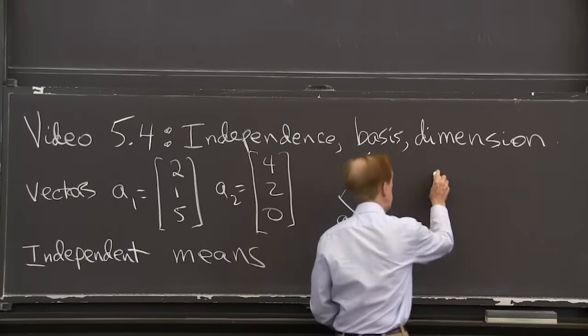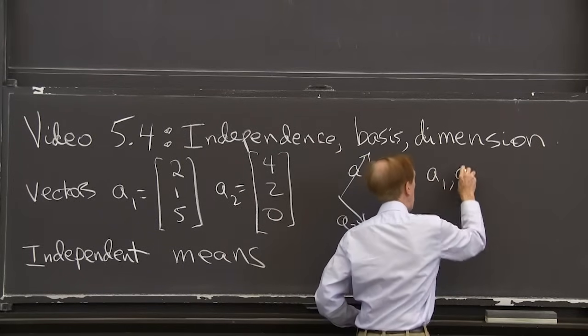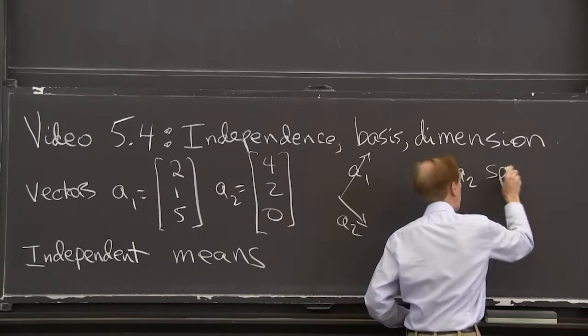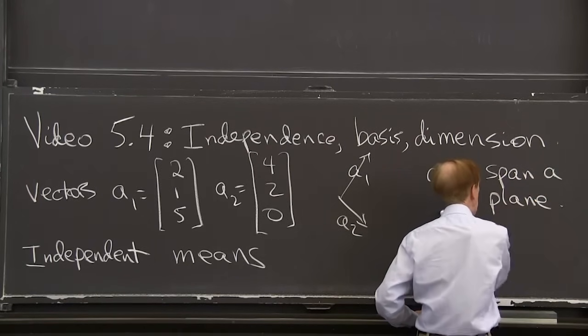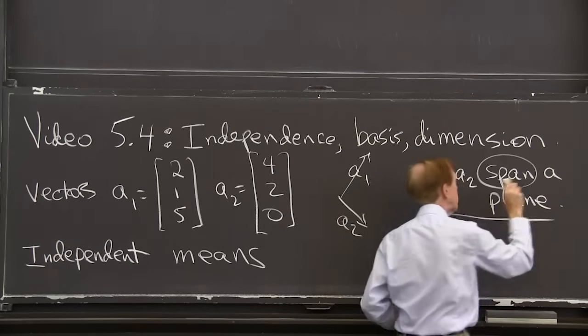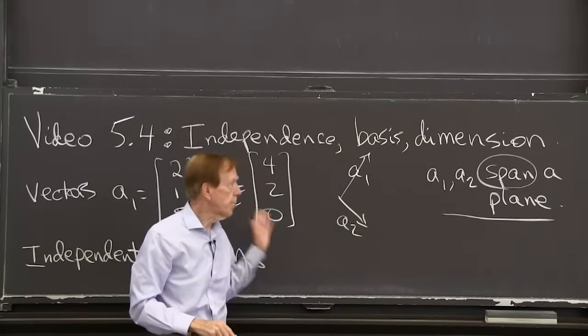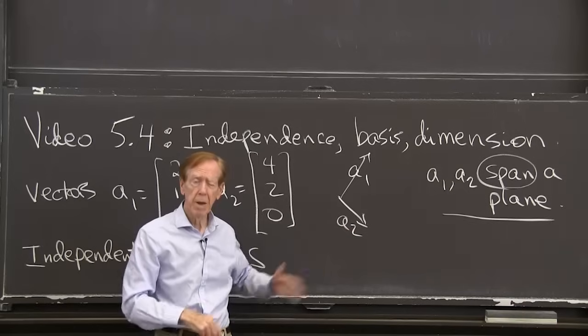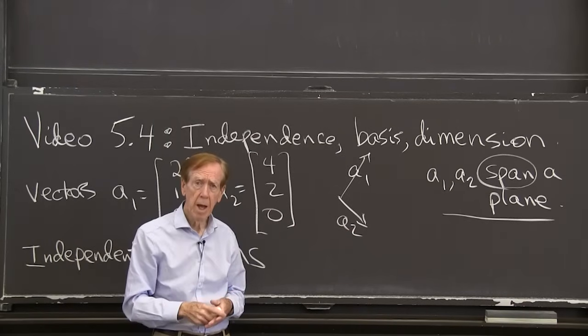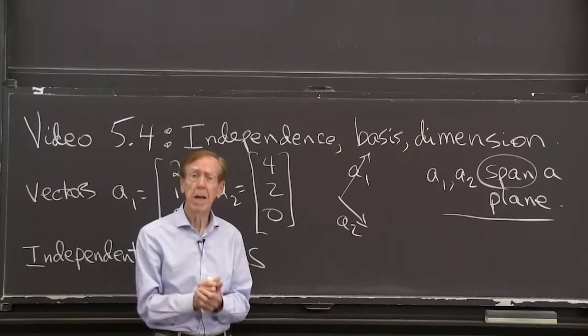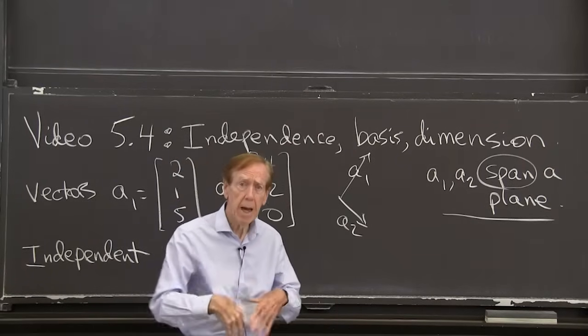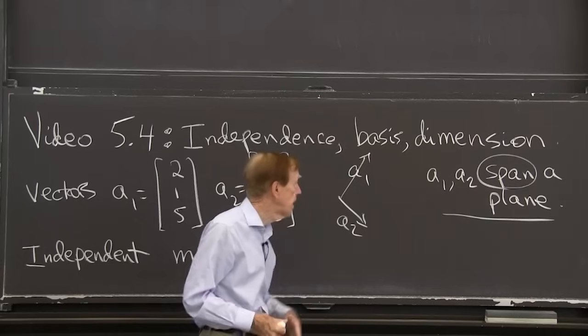a1 and a2 span a plane. And here's the key word, span. So there are two vectors. They're in three-dimensional space. And the plane they span is all their combinations. That's what we're always doing, taking all the combinations of these vectors.